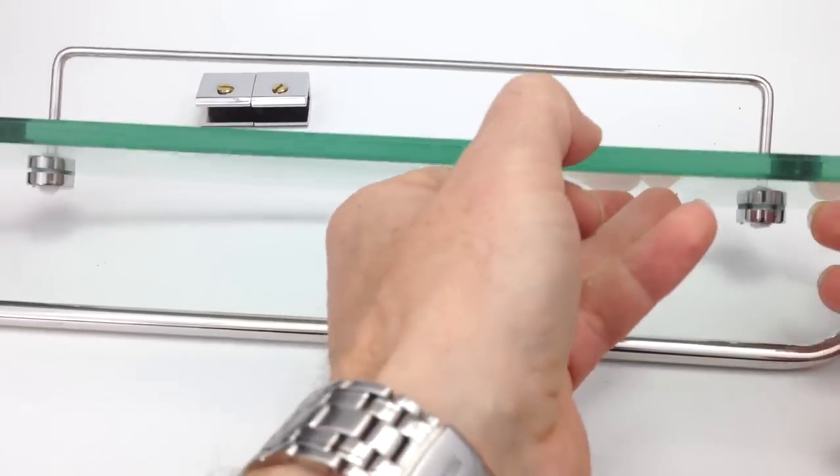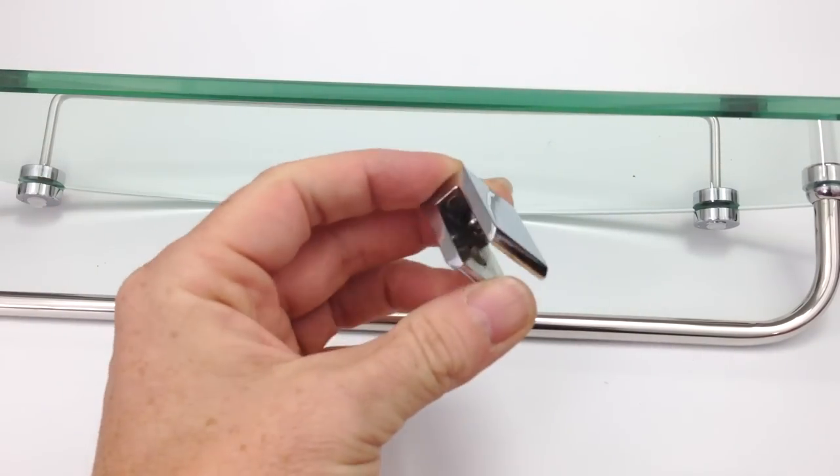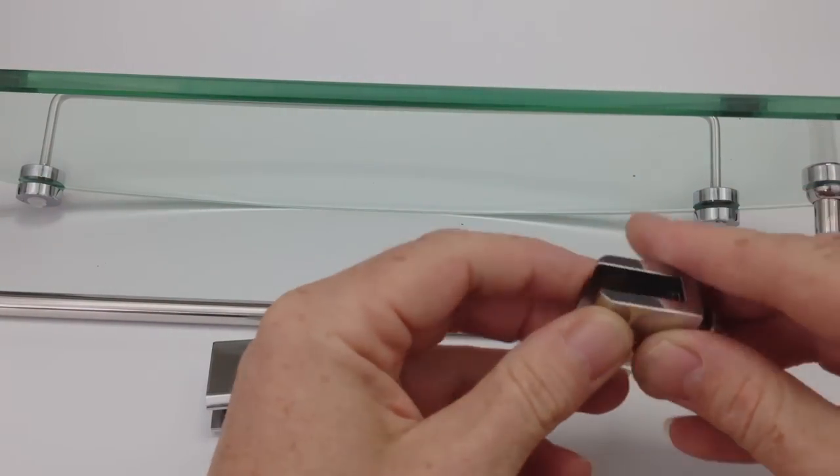And that's the assembly complete. So now we just need to take the shelf and the two fixing brackets over to our shower.